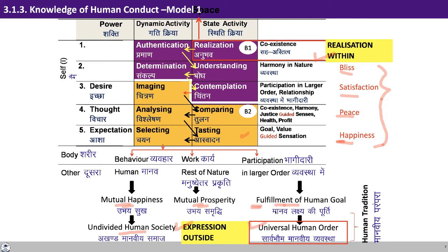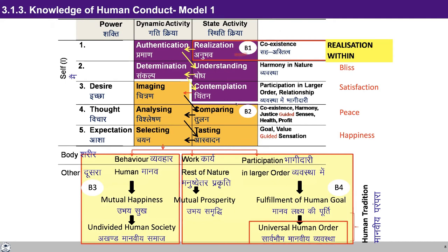We talked about block B1 and B2 so far. Now block B3 is my conduct with the human being, and block B4 is my participation with the rest of nature and in the larger order. B3 and B4 get definite with the activation of B1. When we are interacting with the human being, we are able to ensure mutual happiness which leads to undivided society — that is our role. Our conduct is always in terms of ensuring undividedness in society. Similarly, whenever we interact with nature, our participation is such that we are able to preserve, enrich, protect and rightly use nature.